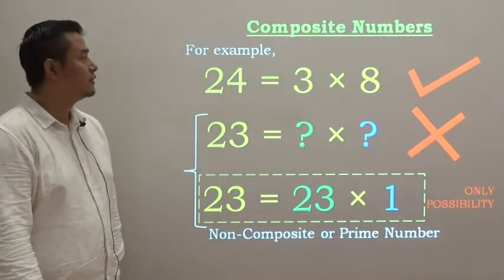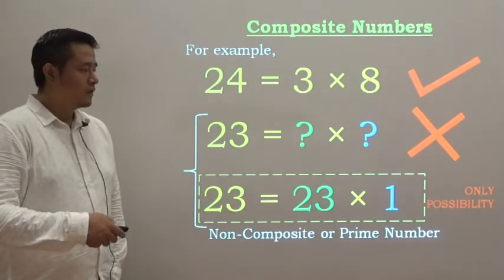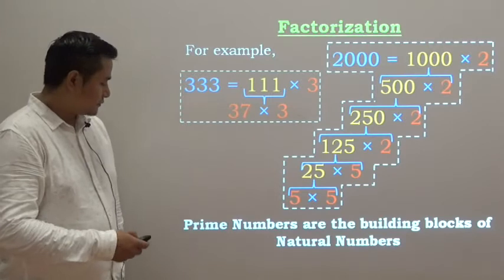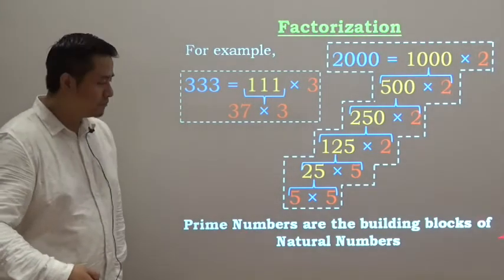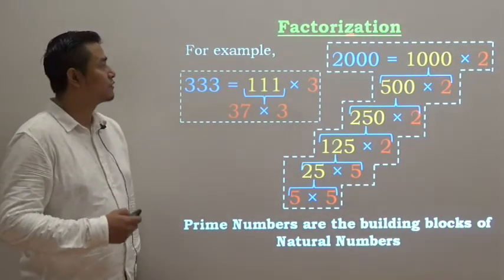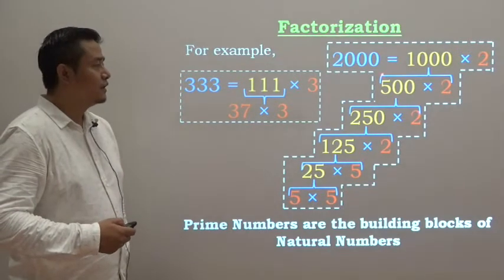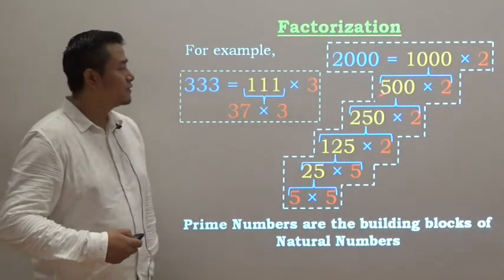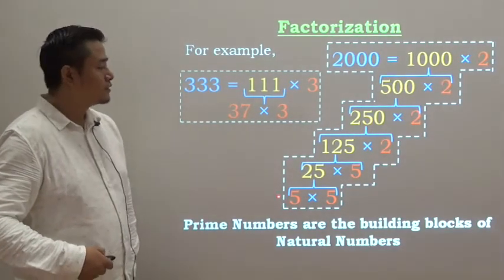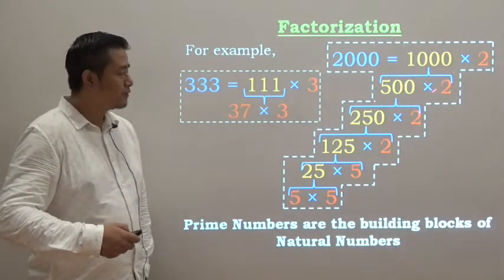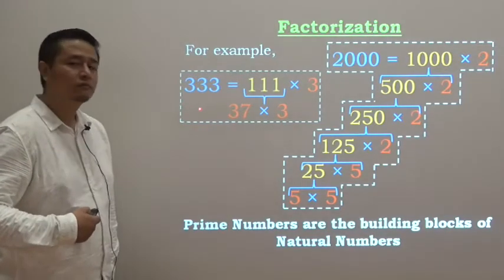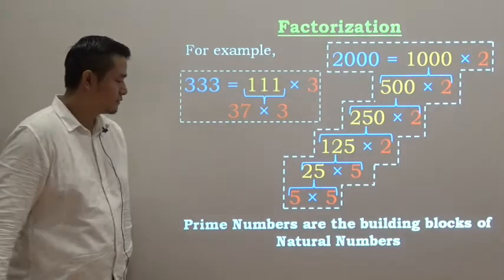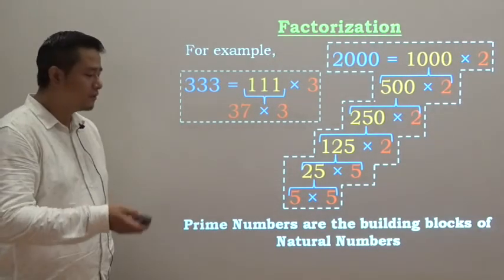In a certain way we can say prime numbers are the building blocks of natural numbers. So we have talked about factorization. 2000 can be written as 1000 times 2, and 1000 itself can be written as 500 times 2, and so on. Eventually when we factorize 2000, we get only prime numbers. Likewise, 333 can be factorized into its prime components.